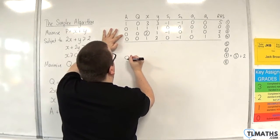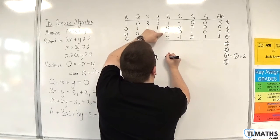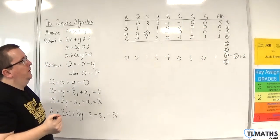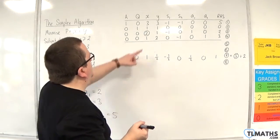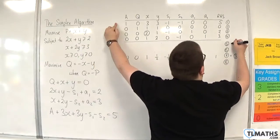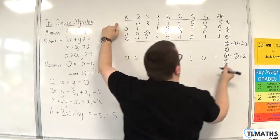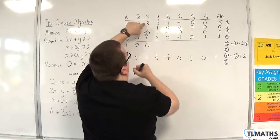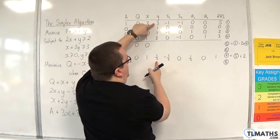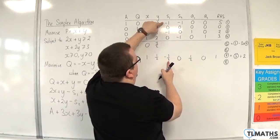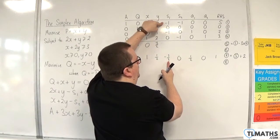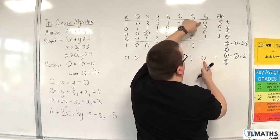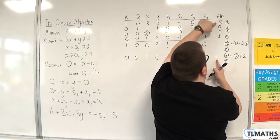Row 7 = row 3 ÷ 2: 0, 0, 1, 1/2, -1/2, 0, 1/2, 0, 1. Then row 5 = row 1 - 3 × row 7: 1, 0, 0, 3/2, 1/2, -1, -3/2, 0, 2.